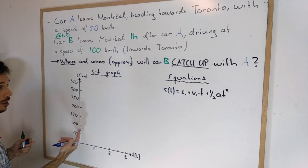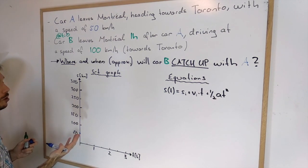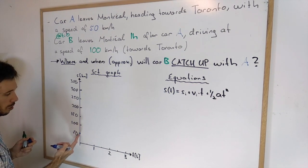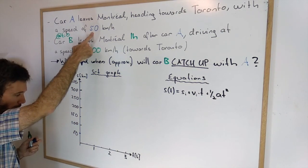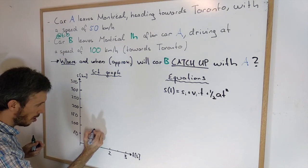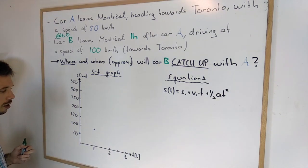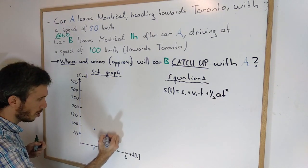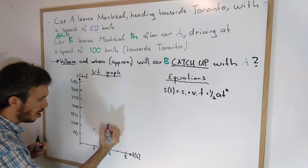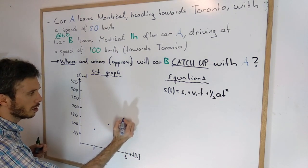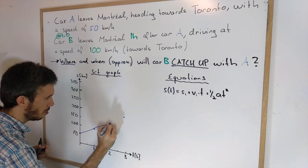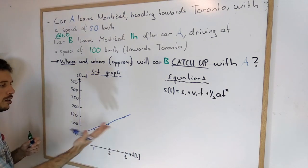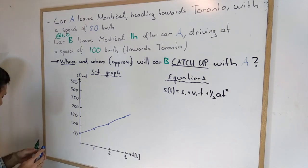Now let's draw the entire graph of A, what it's doing. In each hour A will be driving 50 km further, so at one hour A is at 100 km, at two hours A will be at 150 km, three hours will be at 200 km. So this is a rough sketch of what A is doing.